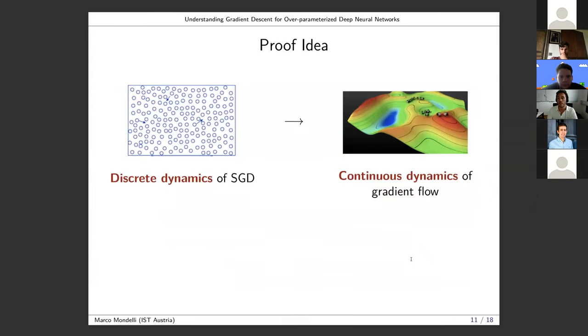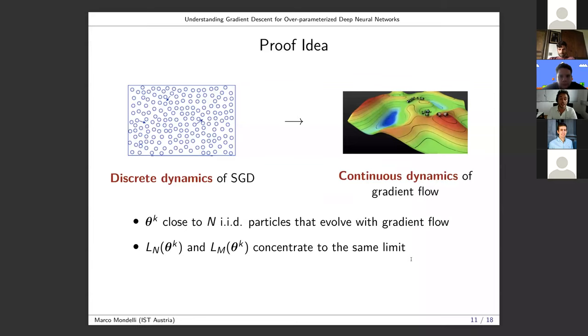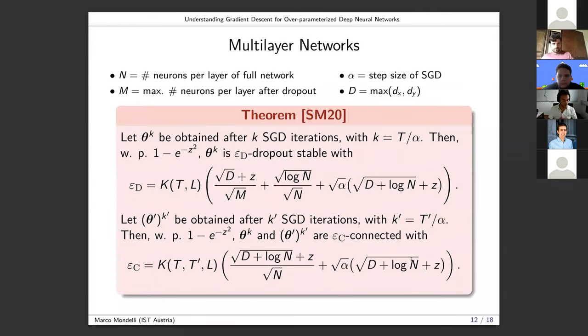I'll have literally one slide about the proof idea. The whole idea about this mean field characterization is basically to say that the discrete dynamics of SGD, which I can think about as the dynamics of a gas here with n particles, gets approximated as n goes large by the continuous dynamics of a certain gradient flow. The idea is that theta_k are close to these particles that evolve according to the continuous dynamics, and these particles are i.i.d. Since these particles are i.i.d., if I could just plug in the i.i.d. particles instead of the weights of SGD, this would be basically just law of large numbers. L_m of theta_k and L_m of theta_k' concentrate to the same limit, and then we can pass from dropout stability to connectivity in a constructive way. We actually construct the path.